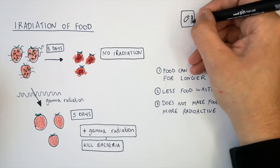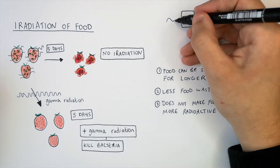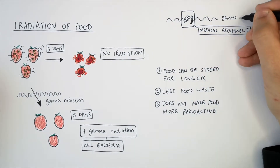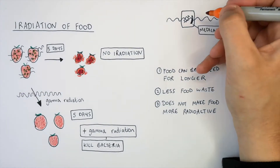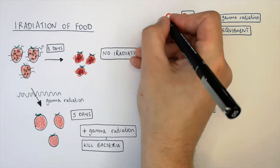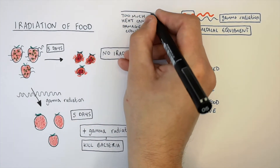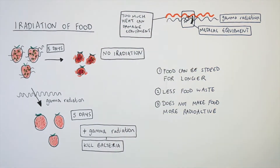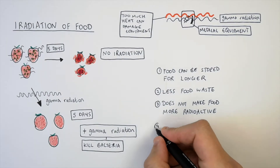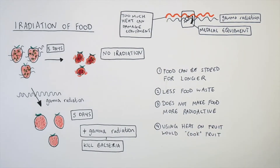Gamma radiation can also be used to sterilize medical equipment. You can seal medical equipment in a bag and use gamma radiation to destroy the pathogens on the equipment. If you use heat on some medical equipment, too much heat can damage the equipment, so gamma radiation will not damage the medical equipment. That's also the reason why you do not use heat to sterilize fruit, because using heat on fruit would cook the fruit and damage it.